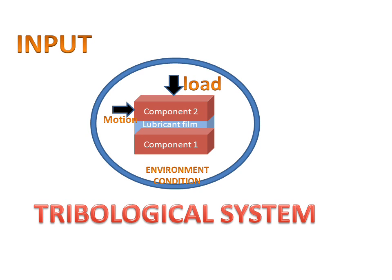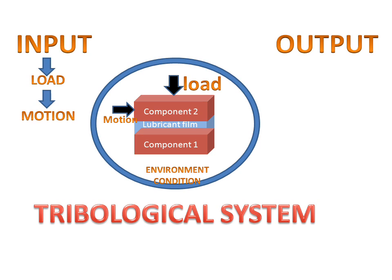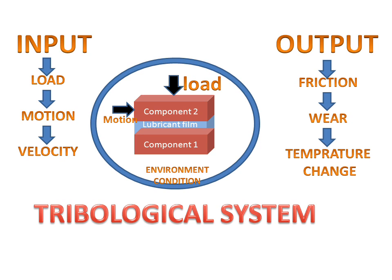Then we have an input and output. Input is in the form of load, motion, and velocity. Output is in the form of friction, wear, and temperature change. So the tribological system is used for measuring the input with respect to output.